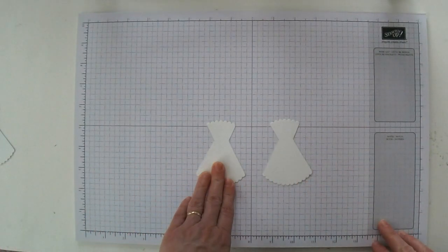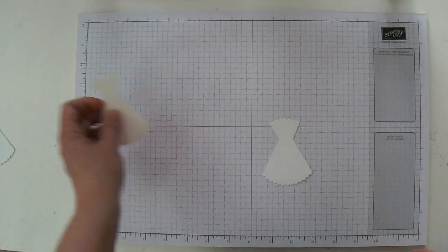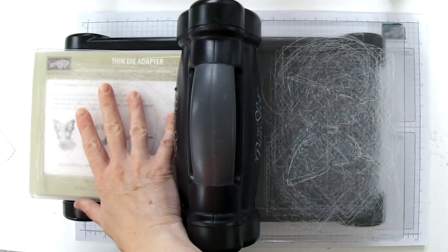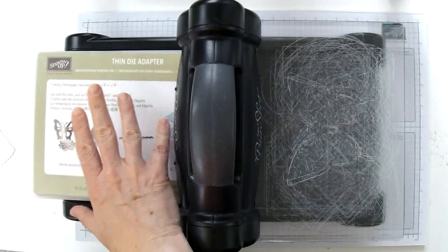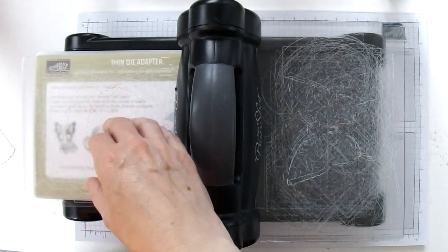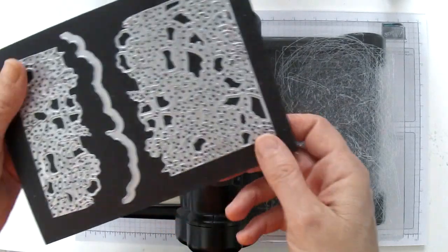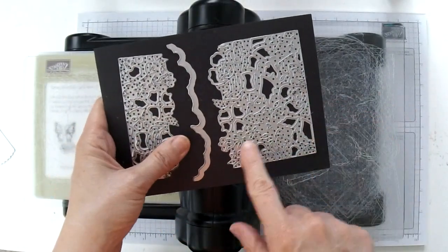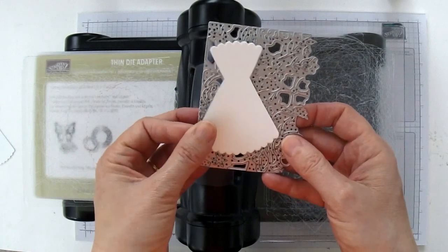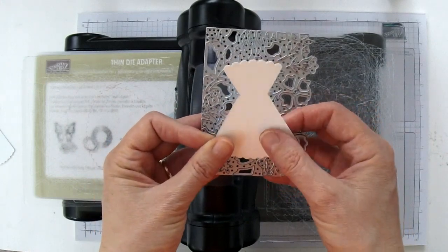And one of them we are going to leave solid. And the other one we're going to bring the Big Shot back in. And here I have again my new Big Shot platform. I've got the thin die adapter piece on top. I've got a cutting plate. And now we're going to take the detailed floral thinlets and I'm going to take this bigger piece. So you're going to take your dress and you're going to just lay it on top of your floral thinlets.